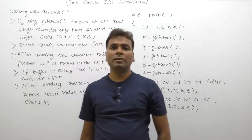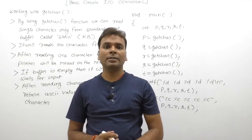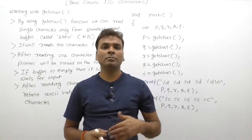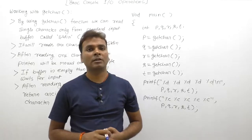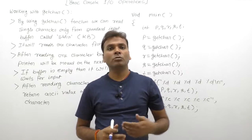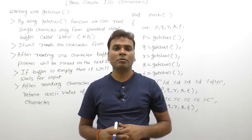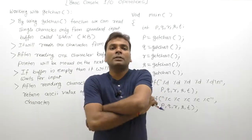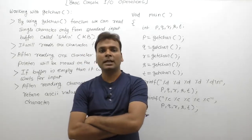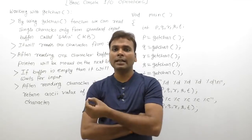Let's see the working of the getc() function in detail. The getc() function is a basic input function which provides basic console input operations. It is used to read a single character from the standard input buffer, called stdin. Using this function, we can read only a single character from the standard input buffer stdin.